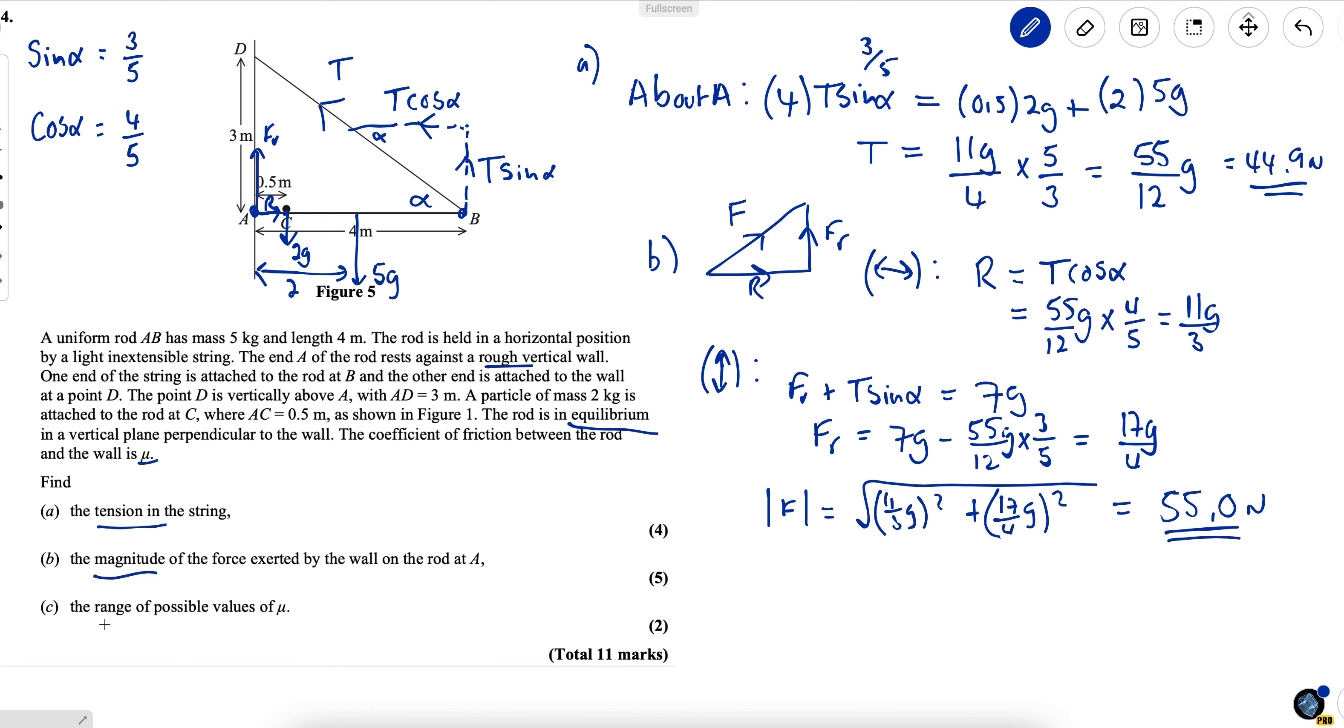This rod is not slipping down it's in equilibrium so it could be that we're at F max friction could be limiting or it could be that friction is less than that. So we have that friction for part C is less than or equal to F max or alternatively friction is less than or equal to mu R.